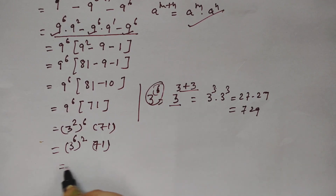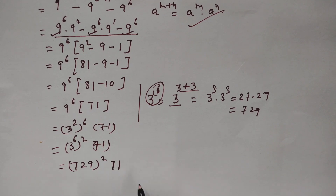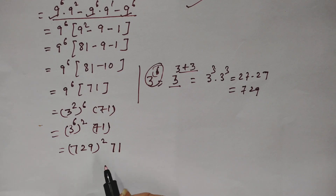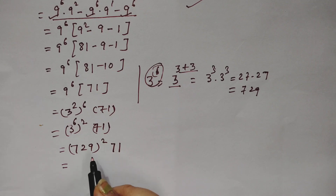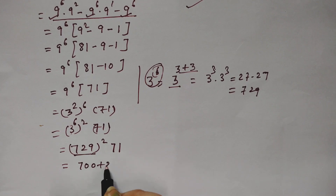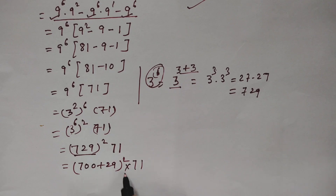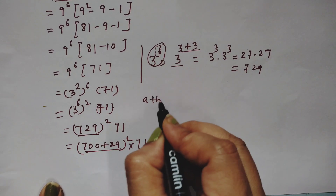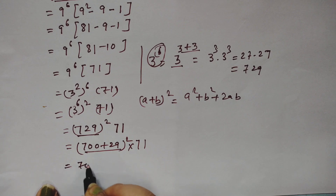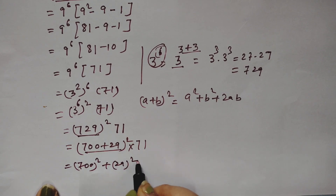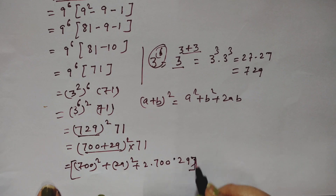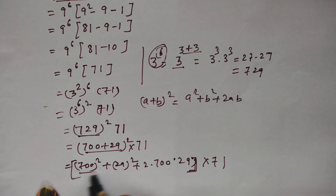So 3^12 equals 729 squared, and our expression becomes 729 squared times 71. To compute 729 squared, we use the identity (a+b)^2 = a^2 + b^2 + 2ab. We split 729 as 700 plus 29, so we have (700 + 29)^2, and 71 remains outside.